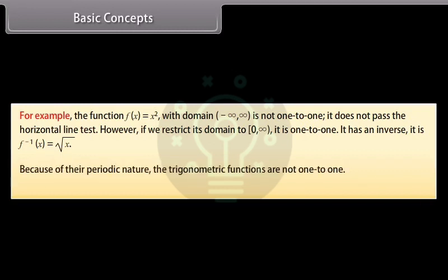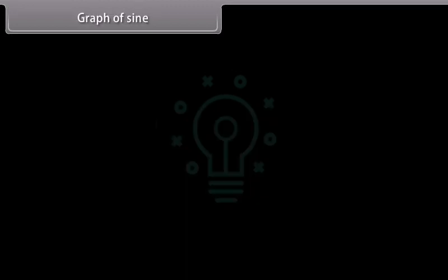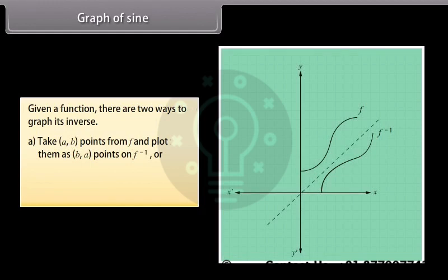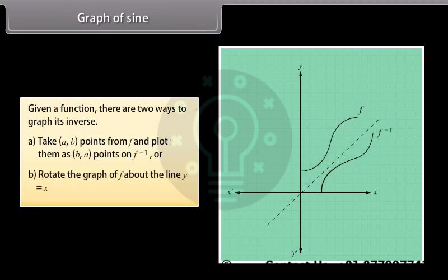Because of their periodic nature, the trigonometric functions are not one-to-one. Given a function, there are two ways to graph its inverse: first, take (A, B) points from f and plot them as (B, A) points on f⁻¹; or second, rotate the graph of f about the line y = x.